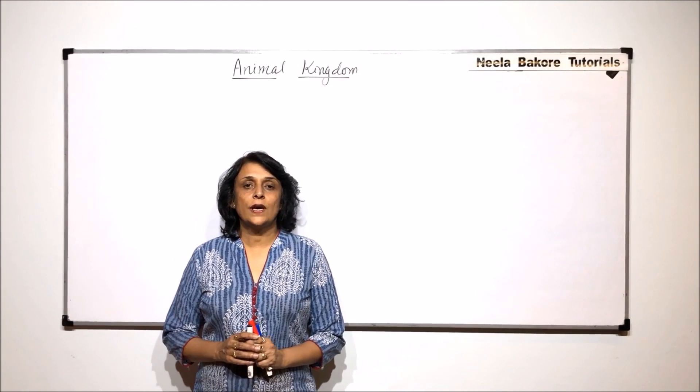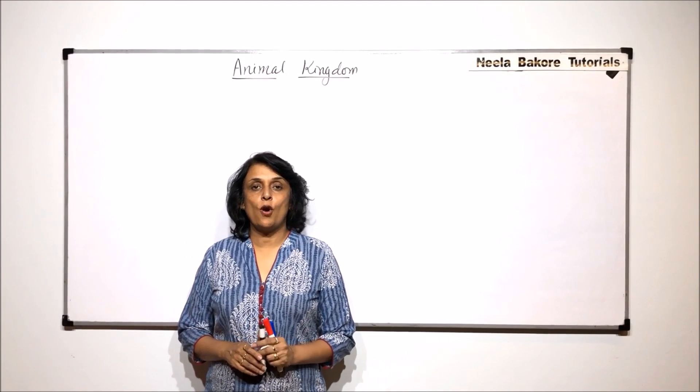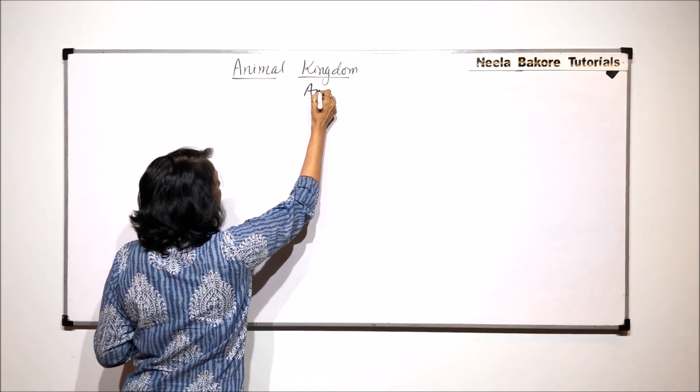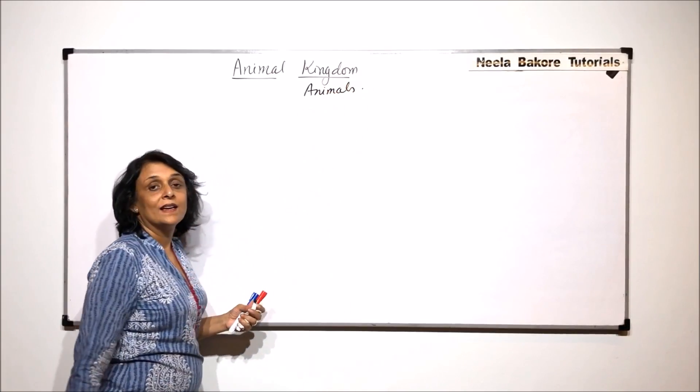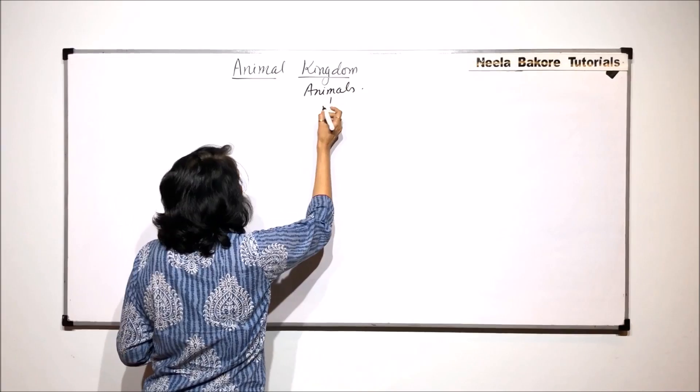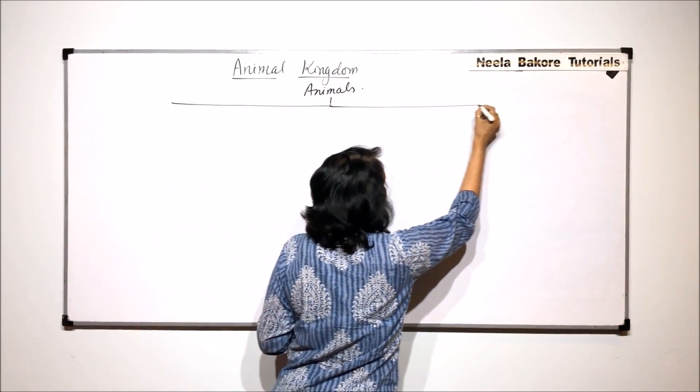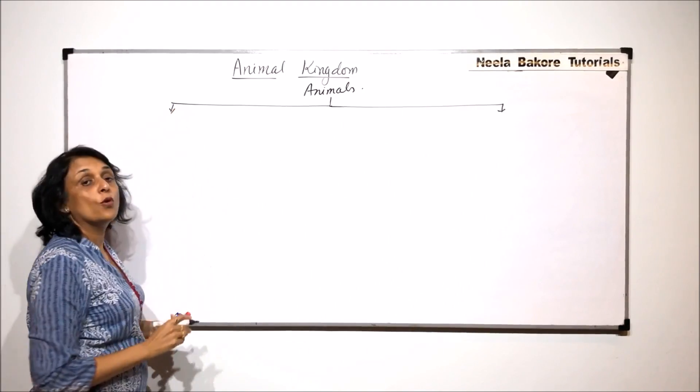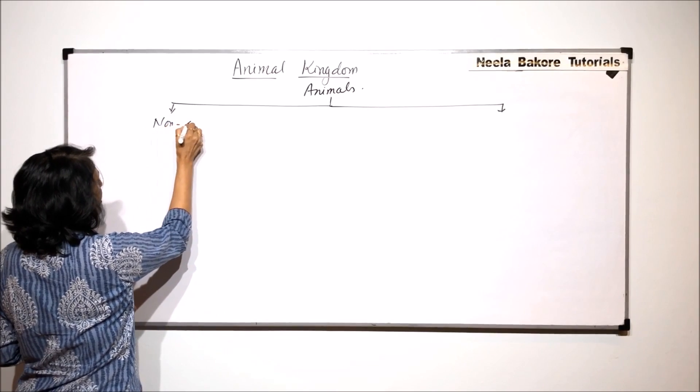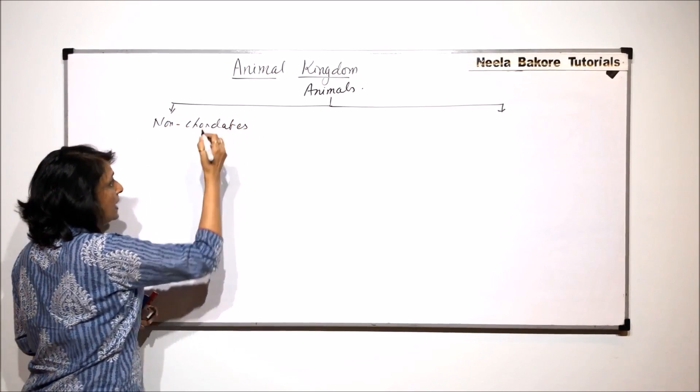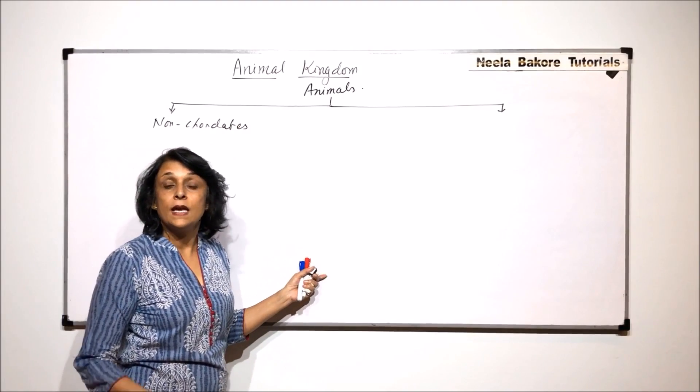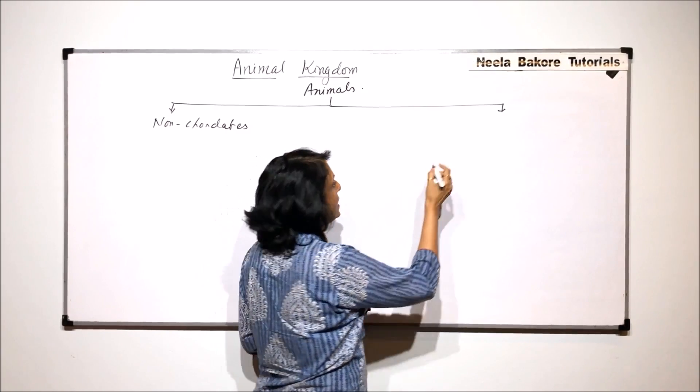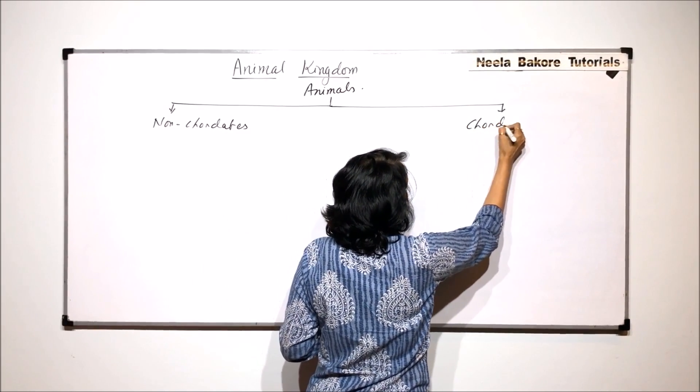In this video we will draw an outline classification of the complete animal kingdom. All these animals are mainly classified into two main groups, and this classification is based on presence or absence of notochord. If notochord is absent we call them non-chordates, and if notochord remains in any part of the life, it could be embryonic, throughout the life, or only during a stage, then they would be called the chordates.